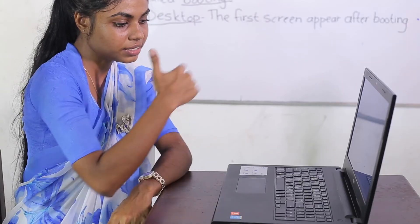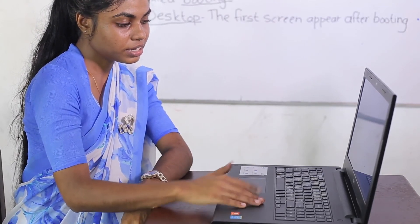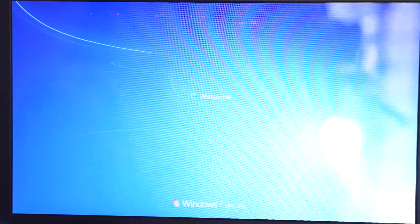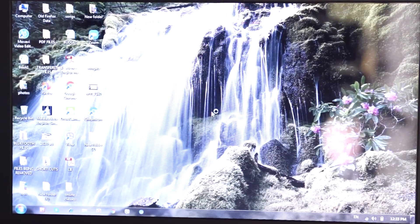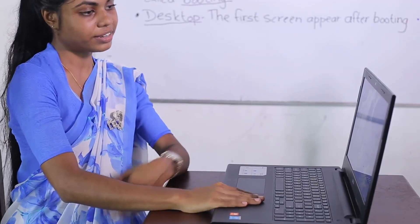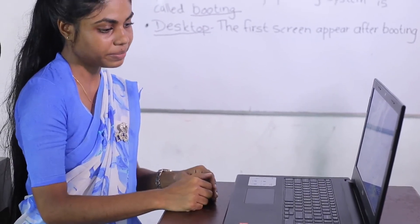Now you can see a plain background — it is booting. It shows the circular motion circle, which means we have to wait some more. Then it says 'Welcome,' which means we are going to enter the operating system now. Now we are on the computer surface — it has finished loading, and after this we can work with this computer system.